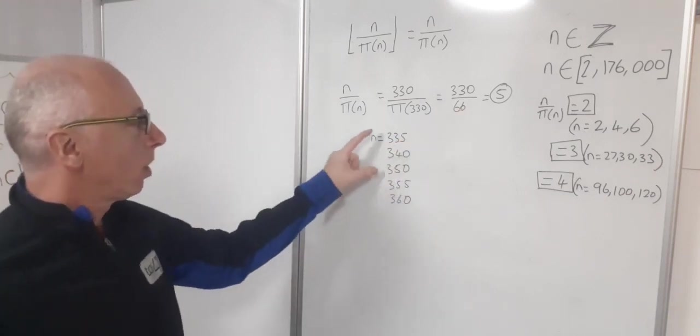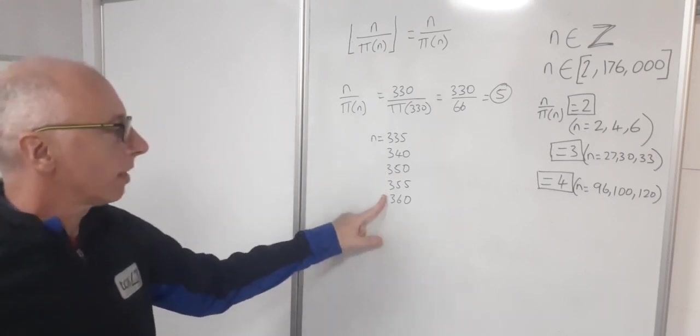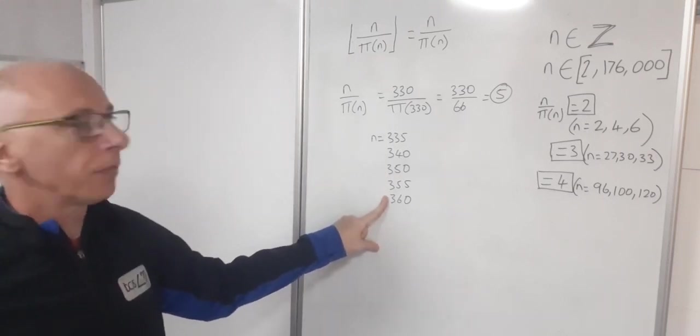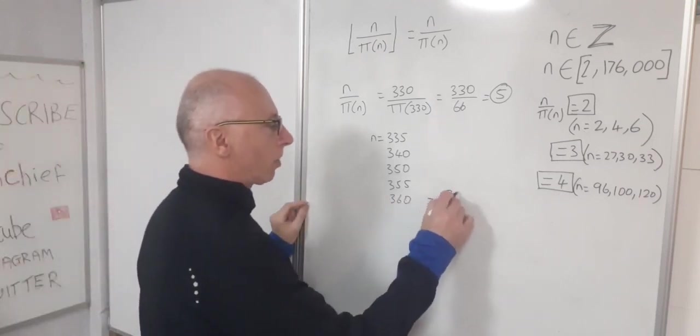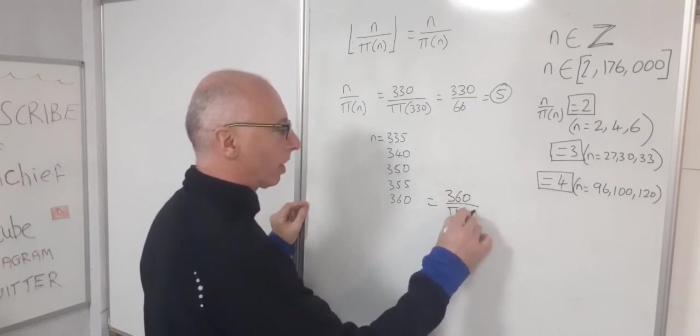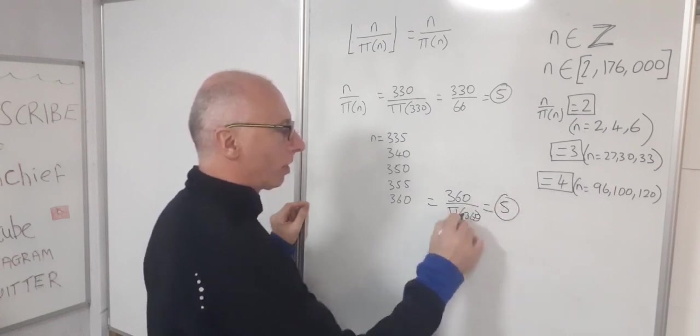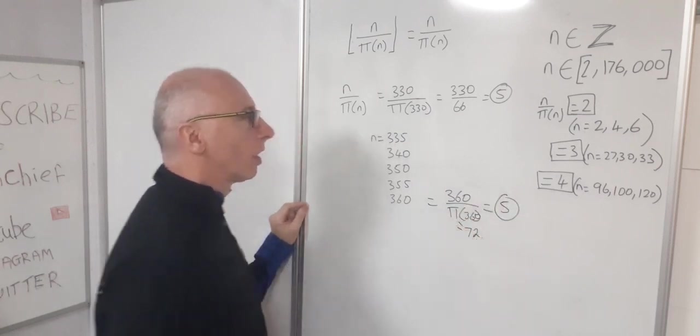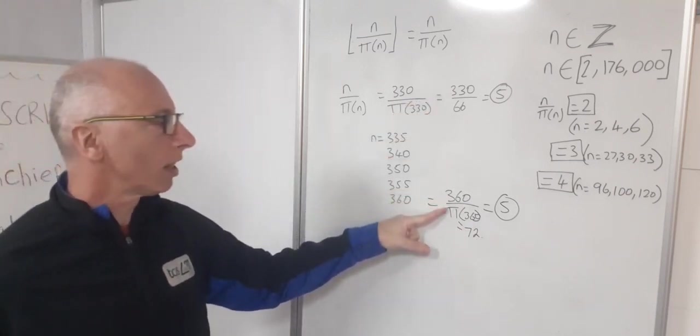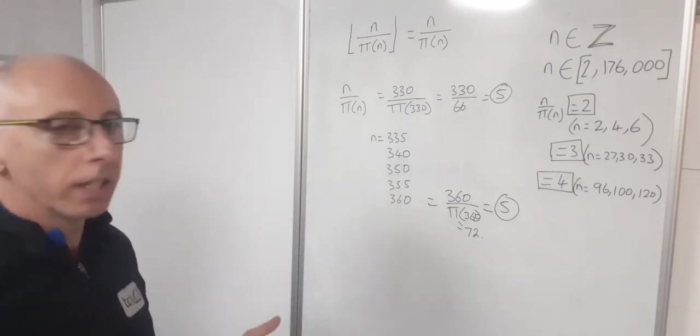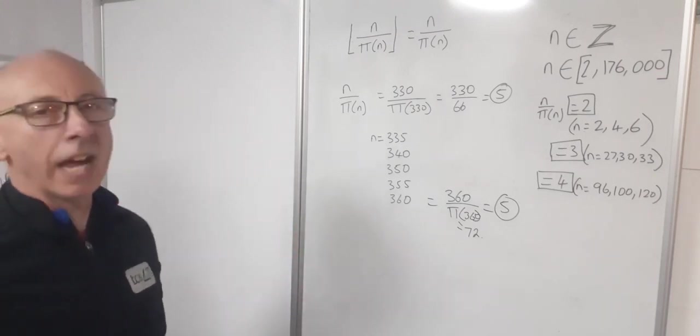And the only other ones I got was 335, 340, 350, 355 and 360. So these also gave me 5. So for example, if I look at 360, so that means I would have got 360 over pi of 360. So that would have given me 5. So this one here would have been 72. So therefore it's telling me that the six prime numbers between 330 and 360, so our prime numbers are still quite tightly spaced.